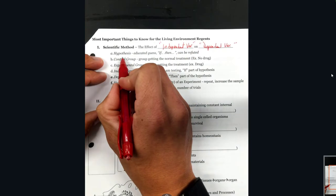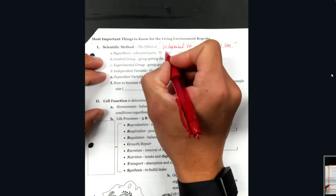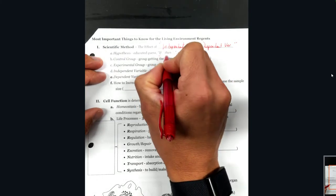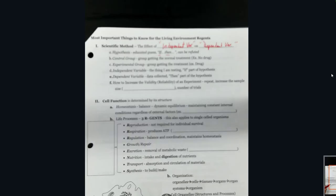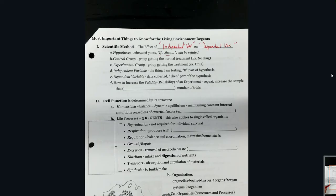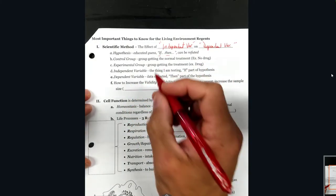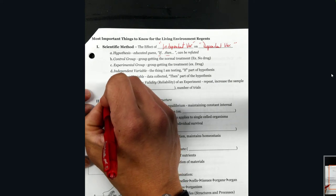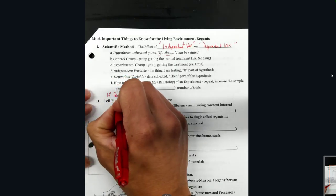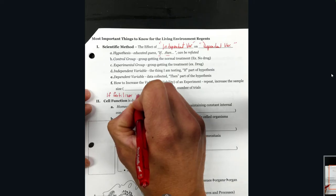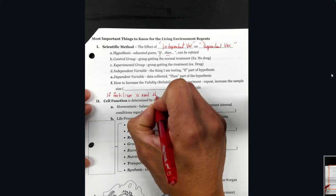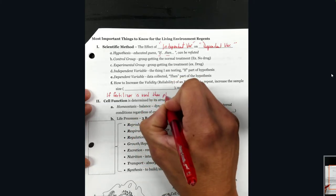Our hypothesis is an educated guess. When we write that, typically we're supposed to write it as an if-then statement. Sometimes on the Regents exam they'll just write it as a statement of something affecting another thing. For example, let's say: 'If fertilizer is used, then plants will grow taller.'